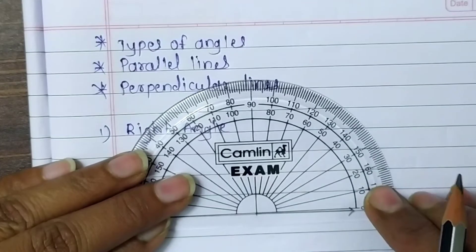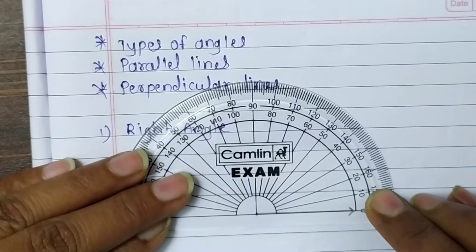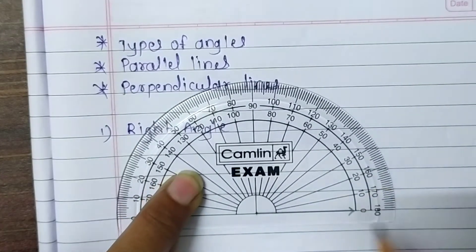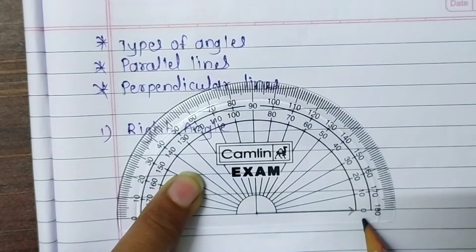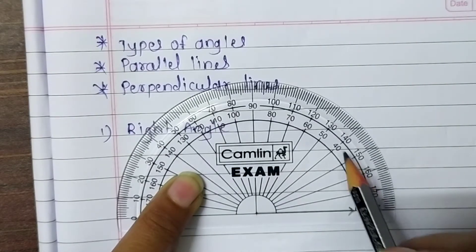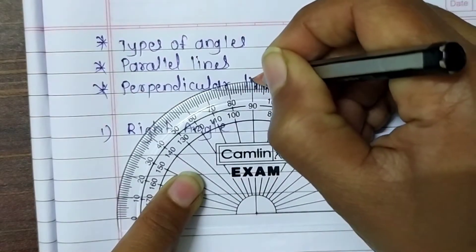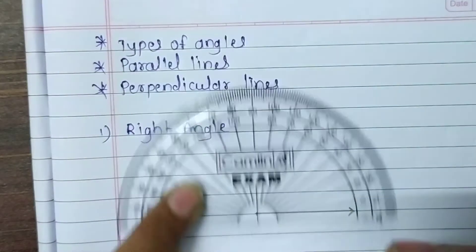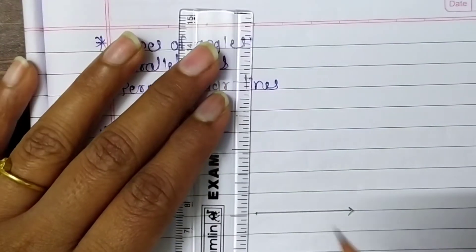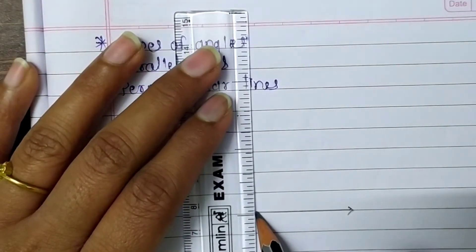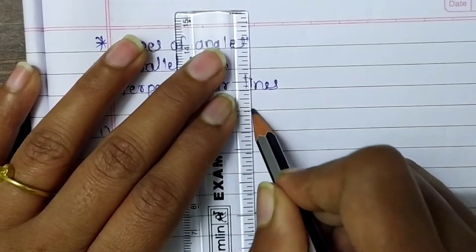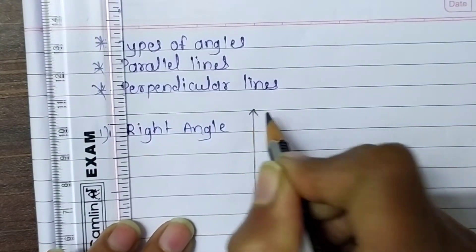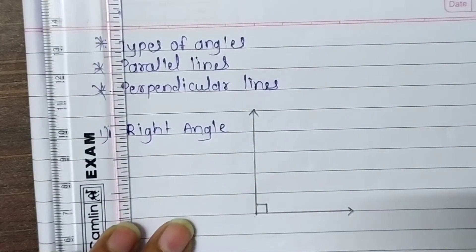Put the center point of the protractor on the vertex, then count from 0 on the opposite side: 0, 10, 20, 30, 40 — here we are going to draw an angle of 90 degrees. This is the 90-degree angle.